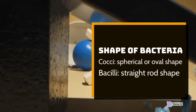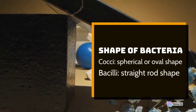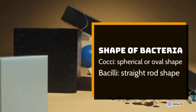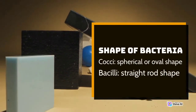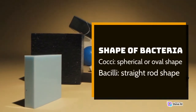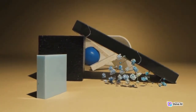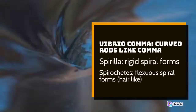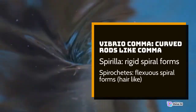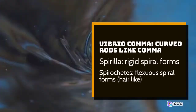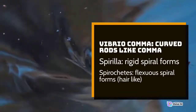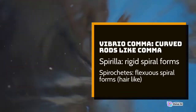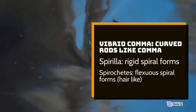Shape of bacteria: Cocci — spherical or oval shape. Bacilli — straight rod shape. Vibrio — curved rods like a comma. Spirula — rigid spiral forms. Spirochetes — flexuous spiral forms, hair-like.